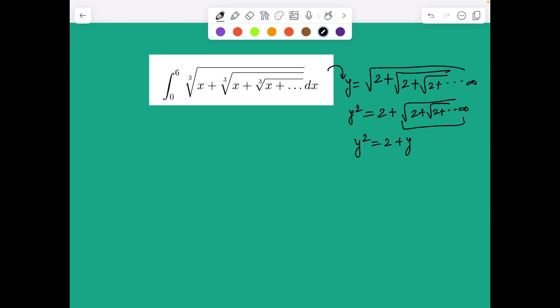So we have y squared equals 2 plus y. We can easily check we're going to have y squared minus y minus 2 equals 0. So we'll get y minus 2 times y plus 1 equals 0, and hence the idea was to discard the root minus 1 because the square root of something can't be negative.